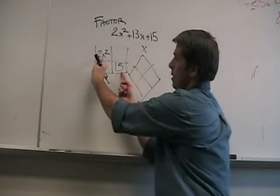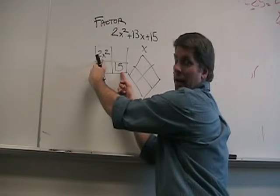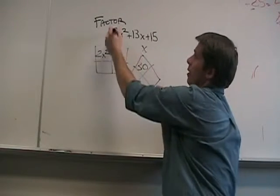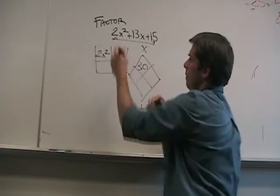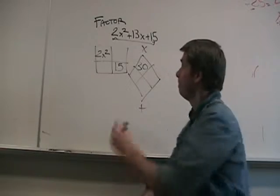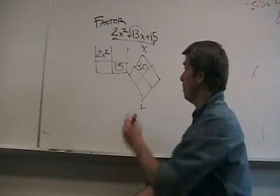The product has to be the same as that product, 30x squared. Notice the product comes from there. And the sum we're going to add to is just that middle term.